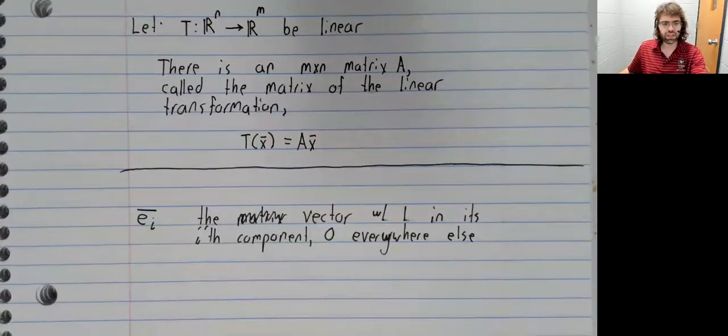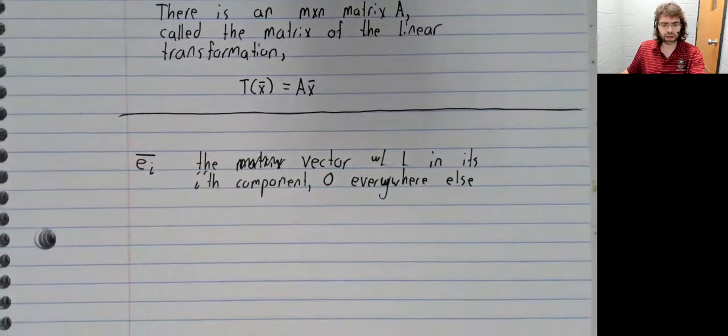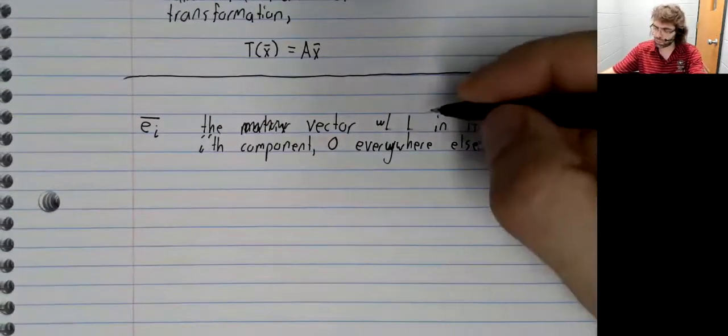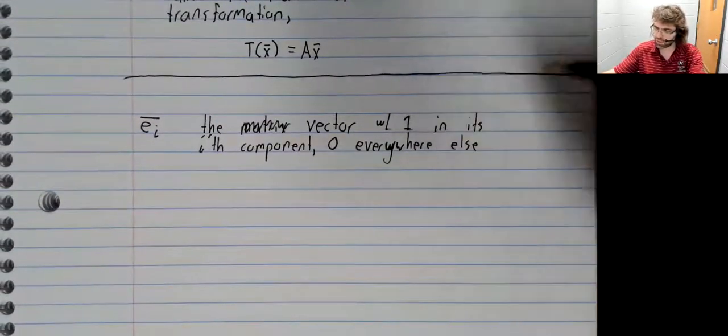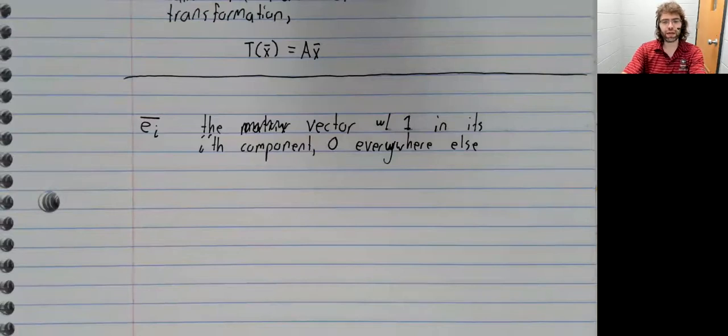Let e sub i be the vector with one in its ith component, and zero everywhere else.